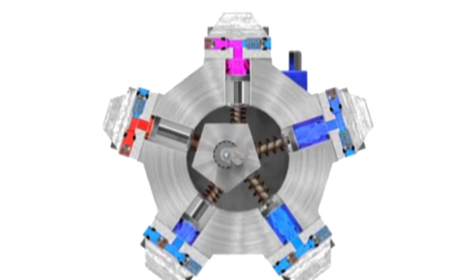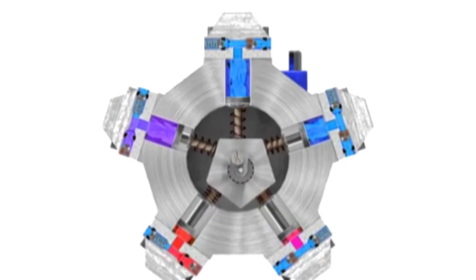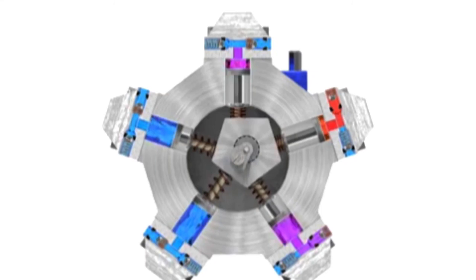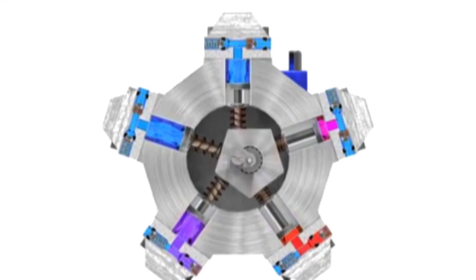Check valves ensure that fluid only enters the inlet ports and only exits the outlet ports. Radial piston pumps have a low noise level, very high loads at low speeds, and high efficiency.